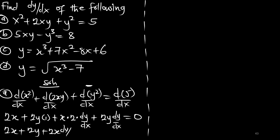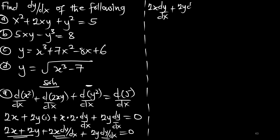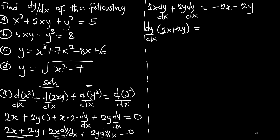We now have two terms with dy/dx and two terms without dy/dx. We group them: 2x dy/dx plus 2y dy/dx equals negative 2x minus 2y. We factor out dy/dx, leaving 2x plus 2y, equal to negative 2x minus 2y.